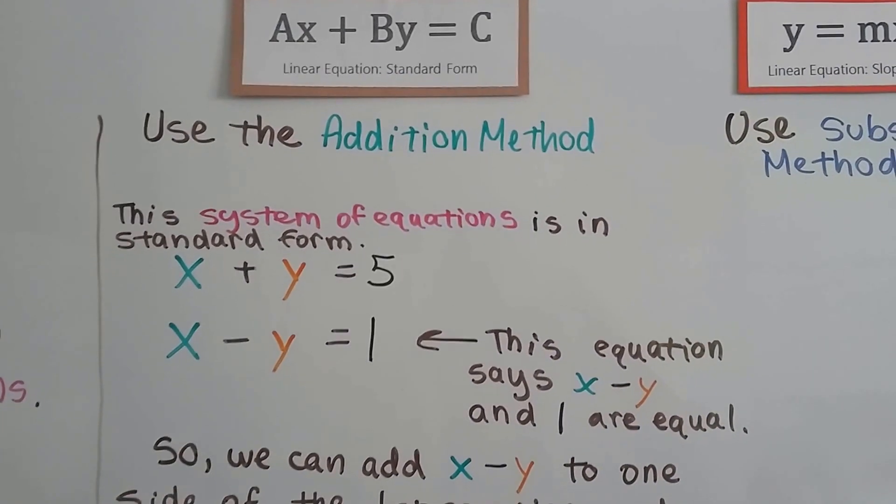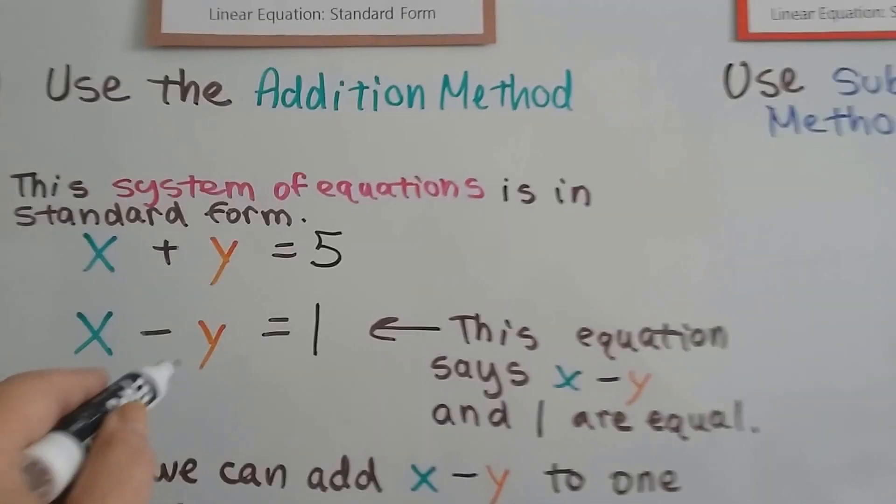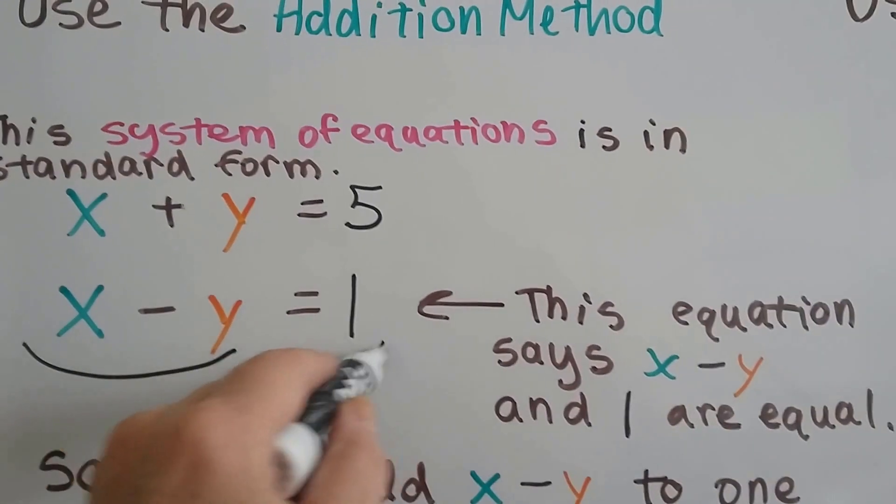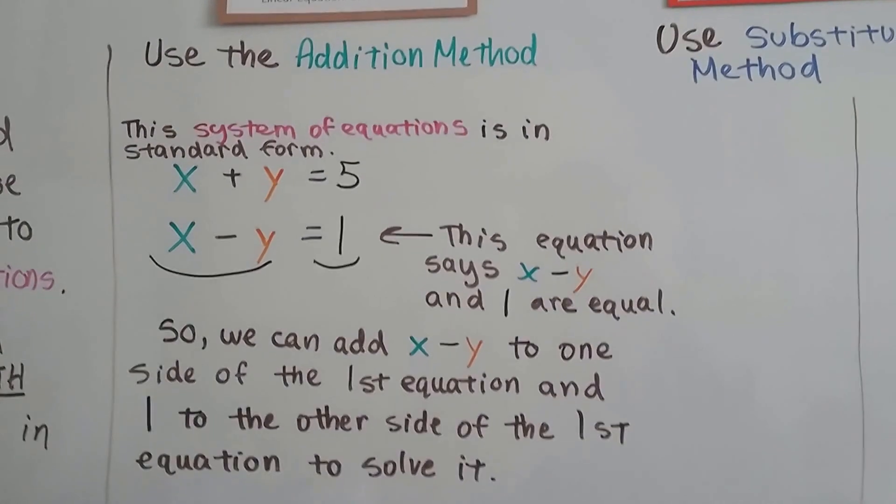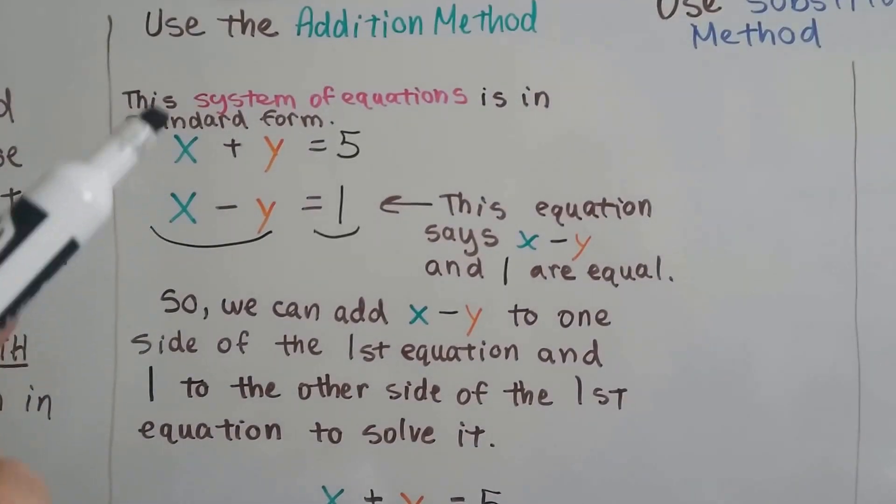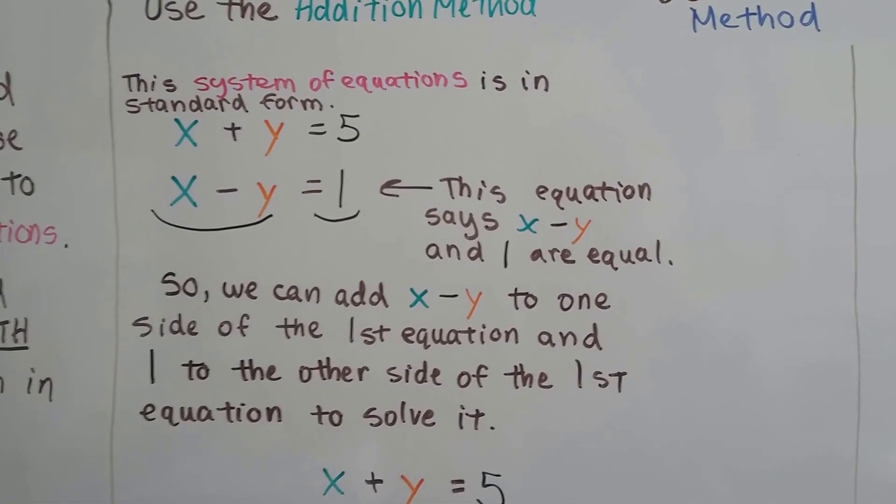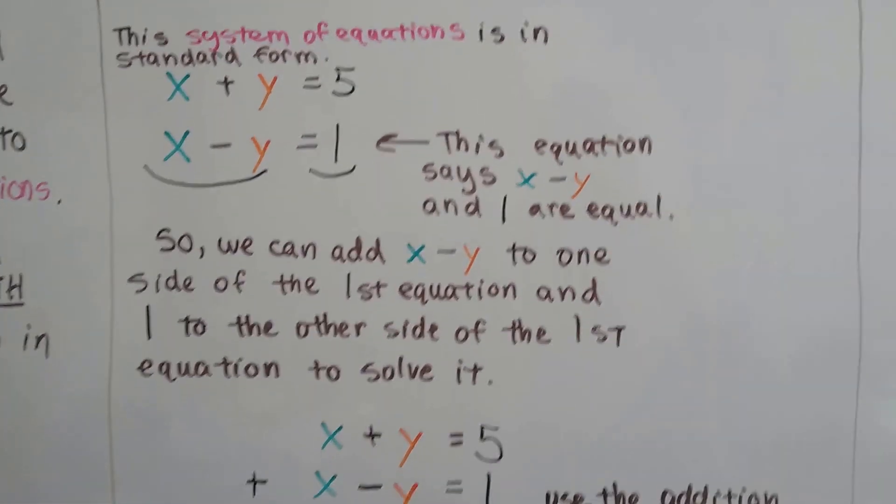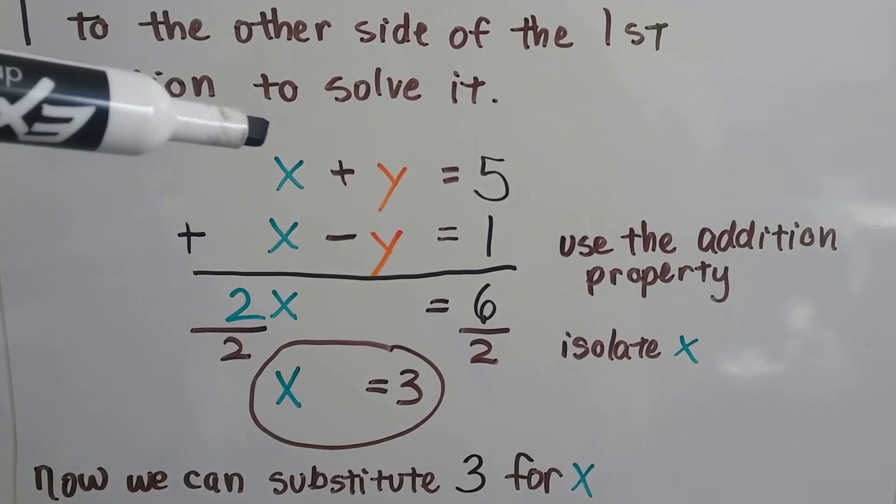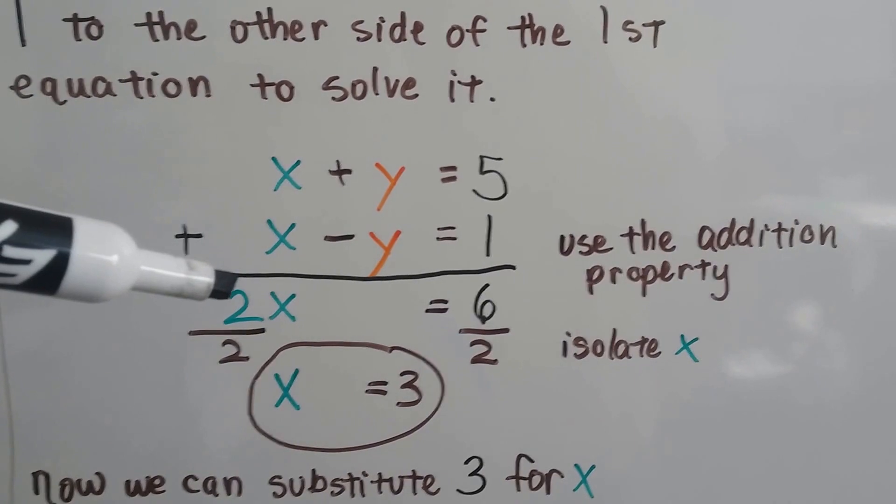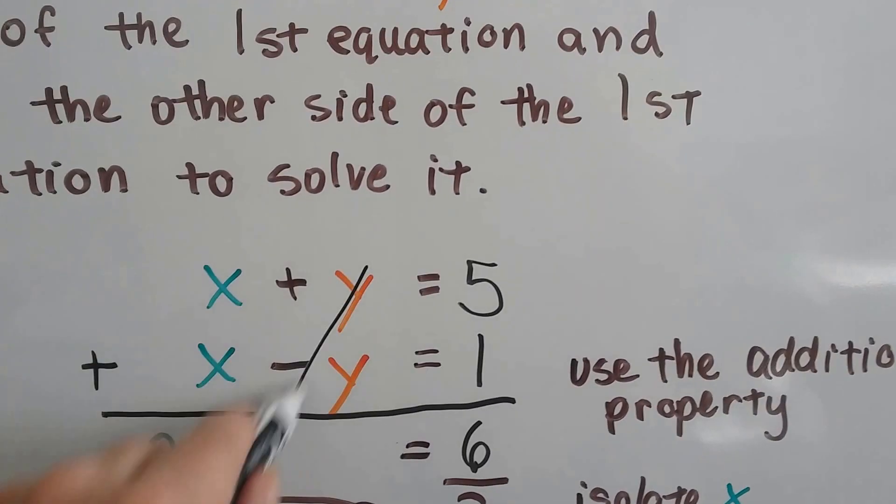This equation says x - y and 1 are equal. This side is equal to this side, right? So we can add the x - y to this side of the equation, and the 1 to this side of the equation, and solve it. We can just stack them up and add them. x + x makes 2x, and this +x and -x makes a zero pair, doesn't it? So it gets eliminated.